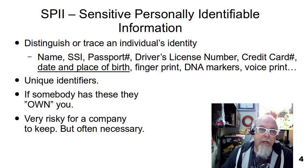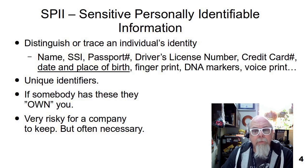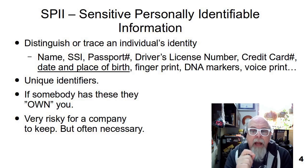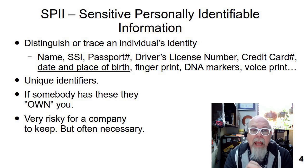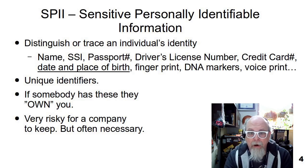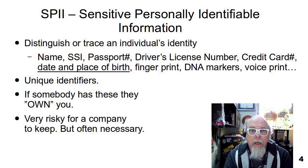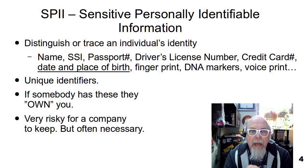The first type of PII is sensitive personally identifiable information, or SPII. These pieces of information can be used to track an individual's identity. For instance, their name, social security number, passport number, driver's license number, credit card numbers, date and place of birth. Date of birth and place of birth independently aren't identifiable, but when you have them together, that links very closely to a single individual. Also fingerprint, DNA markers, voice print, and gait recognition — you can go on and on of all the things that can be used to directly identify a person.